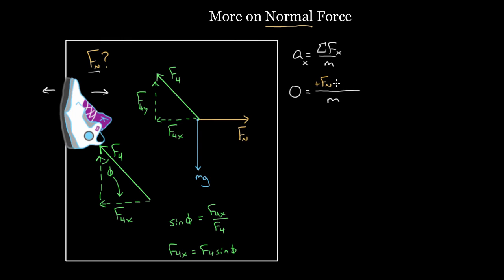And now I can use this up here, but you gotta be careful with signs. F4x points left. I'm gonna consider that a negative force. So if F4 sine theta represents the magnitude, I'll write this as negative F4 sine phi. Sorry, I keep saying theta, I mean phi. I multiply both sides by m. I get zero again on the left hand side equals,